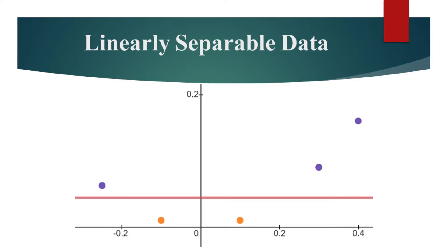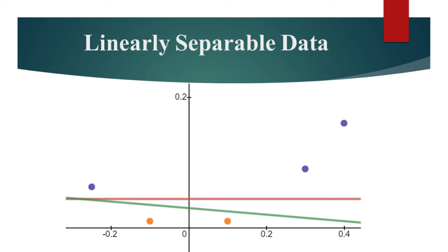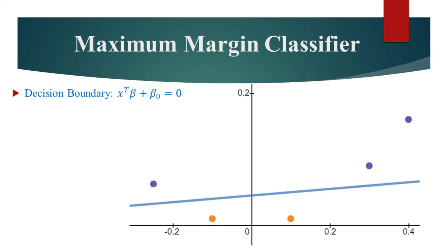For example, this red line does separate the two classes, and so does this green line, but neither of them are doing it the best. This blue line, however, can be considered the best, so let's see why.